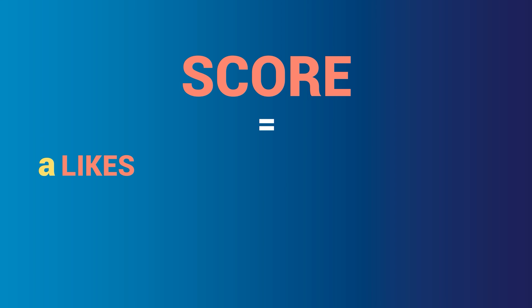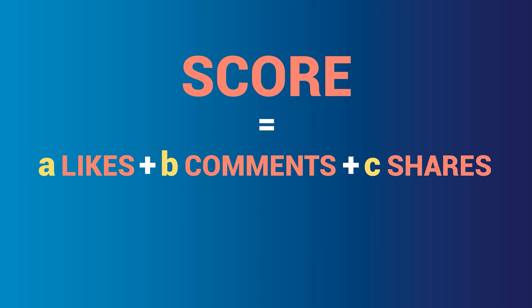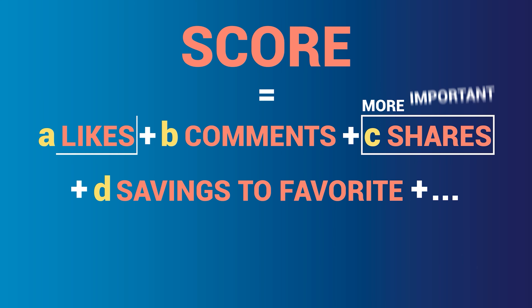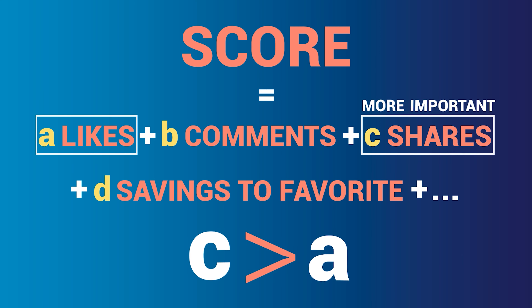All algorithms at their core follow the same set of rules. But how does the algorithm find relevant content for the user? Simply by ranking the posts. All algorithms rely on factors to determine whether a piece of content is good or not. Actions like reposting, commenting, saving, or liking give a post a score that helps the algorithm find the best content to spread on the platform. An algorithm could look like this: score equals A times likes plus B times comments plus C times shares plus D times saving to the favorite, etc.